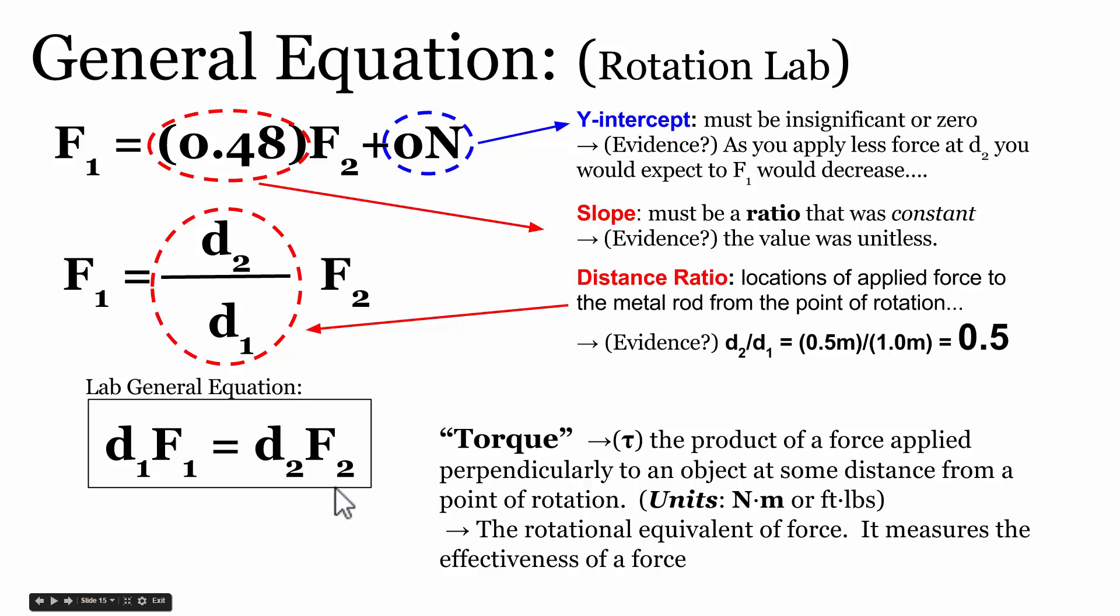On your AP equation sheet, you will not see torque equals D times F. You'll actually see torque equals R, which stands for a distance from some point of rotation, times F. And this symbol right here just means perpendicular. So if you apply a 10 newton force at a distance of 1 meter away from a point of rotation, and that force is perpendicular, you can just multiply 1 meter times 10 newtons, so it would have a torque, a rotational equivalent effectiveness of 10 newton meters.